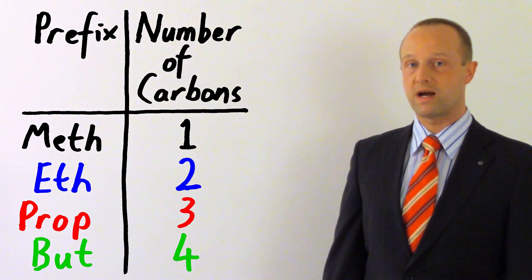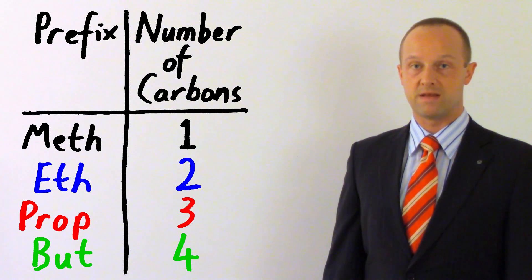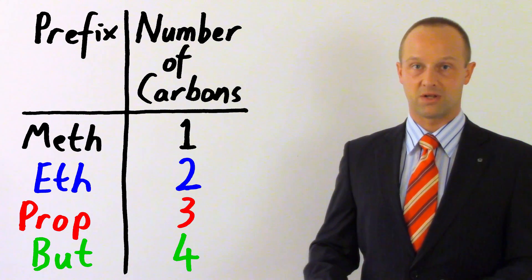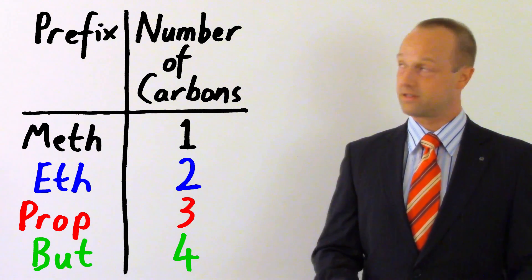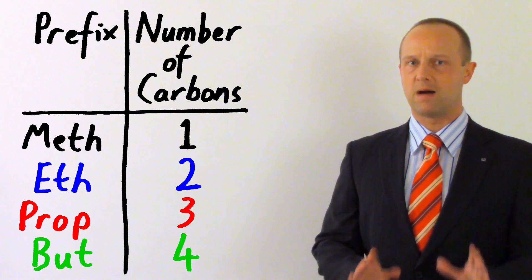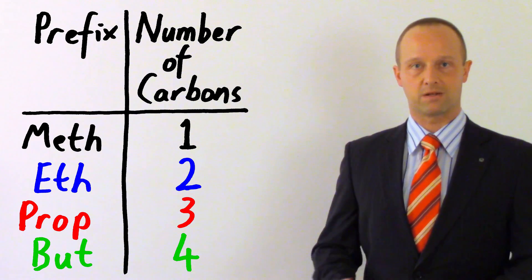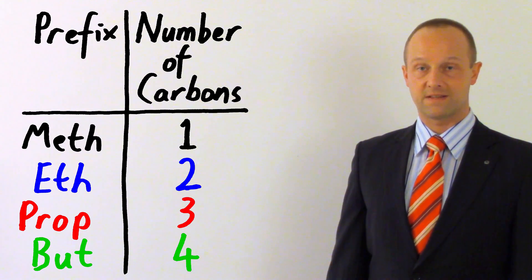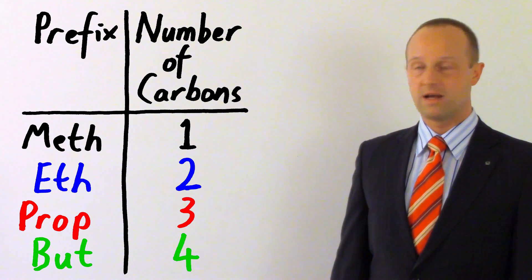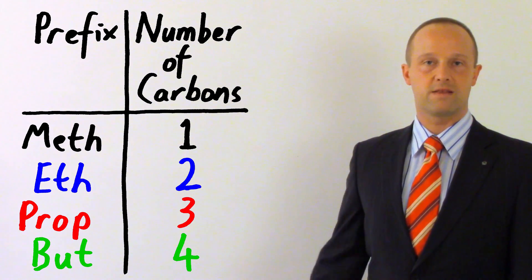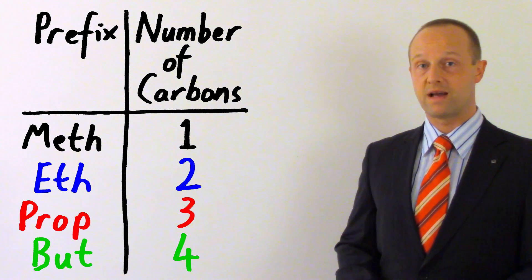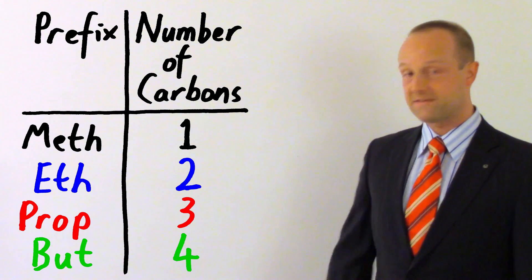The prefix of each of these names relates to how many carbon atoms there are. First, if there's one carbon atom, the name starts with meth. When we've got two carbon atoms, we've got eth. Then we've got prop, which is three, and but, which is four. So, meth, eth, prop, but.